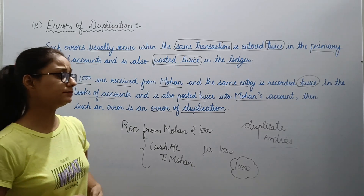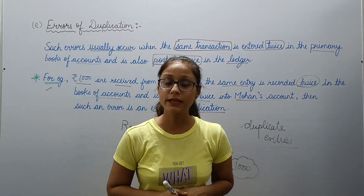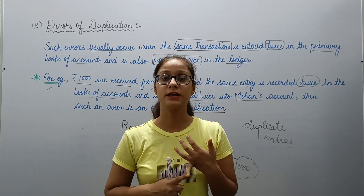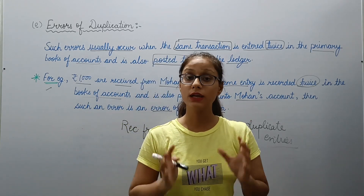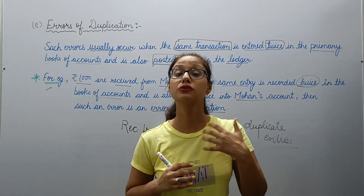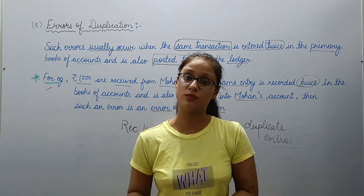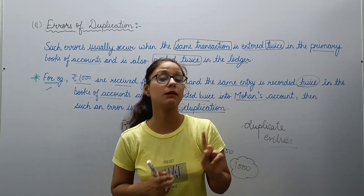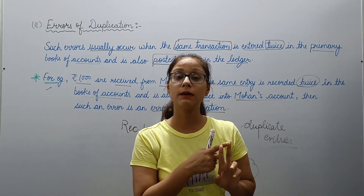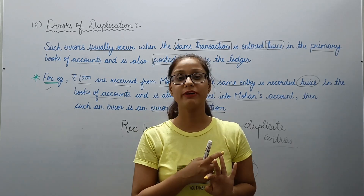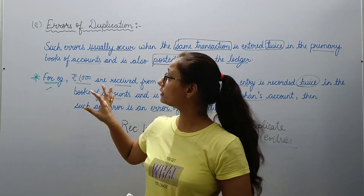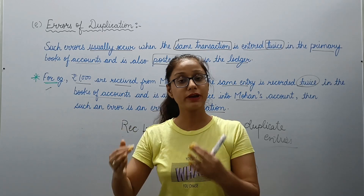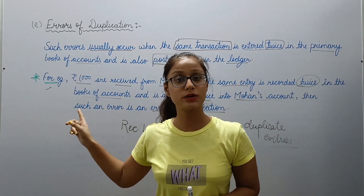This was a very simple topic. Let's see what was discussed in today's lecture — the objective of auditing. Basically we are having three objectives. First was the main objective — to check correctness, truthfulness, and fairness of the accounts. To fulfill this, we have some subsidiary objectives, of which first was detection of errors, second was detection of frauds, and third is prevention of frauds and errors. The first part — detection of errors — we have covered today.